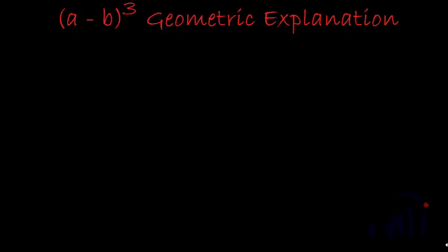Hi, today we are going to understand the geometrical explanation of A minus B whole cube. So what is A minus B whole cube? It is actually the volume of a cube whose one side is equal to A minus B. So this we have to represent in terms of A and B.